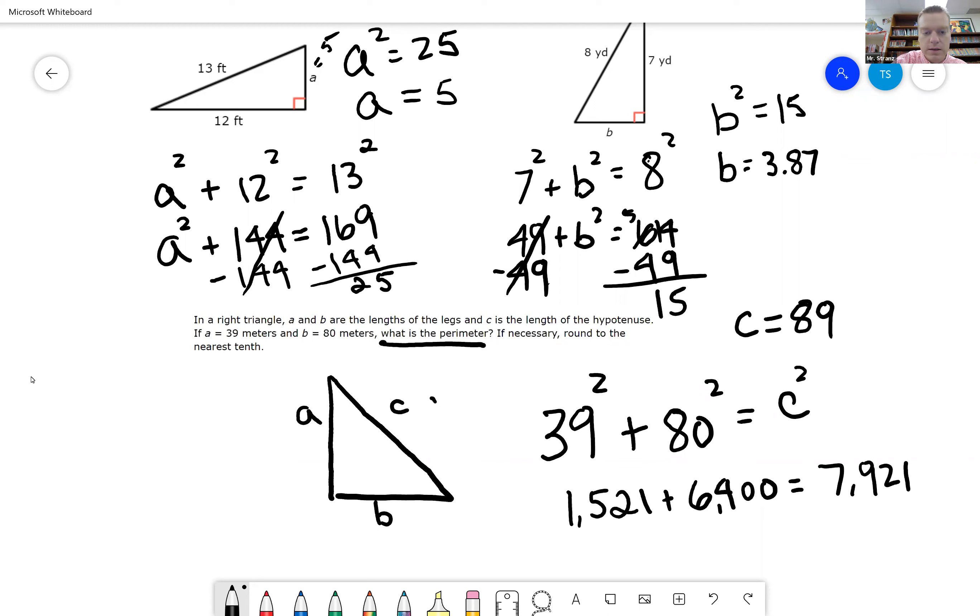So we got 89, we got 39, and we got 80. If we add up all those, because we're trying to find perimeter, so we got 39, 80, 89, add them all up.